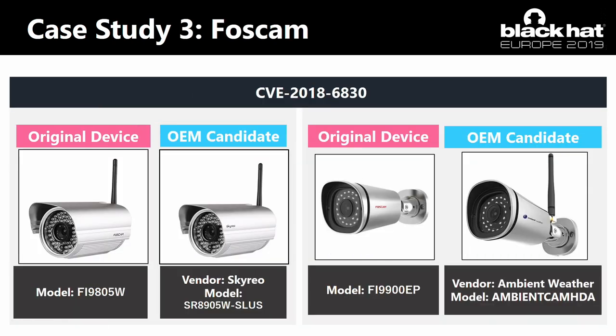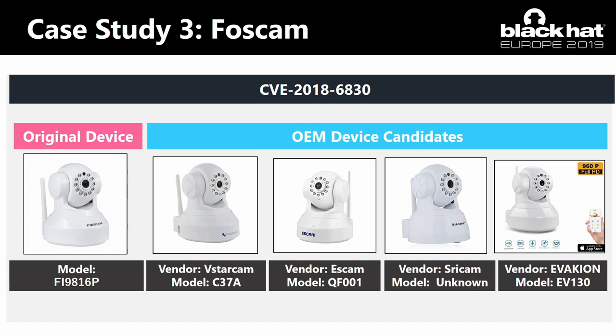Next, this slide shows the OEM device candidates of FOSCAM network camera models FI9805W and FI9900EP. As a result, I found one OEM device candidate from each original device. And lastly, this slide shows OEM device candidates of another FOSCAM network camera, where I found more than four unique OEM device candidates from four vendors.